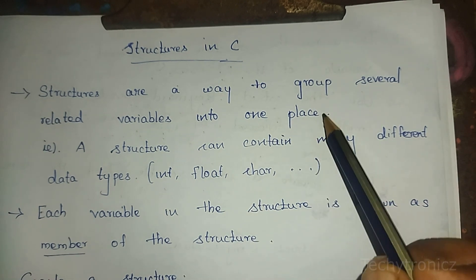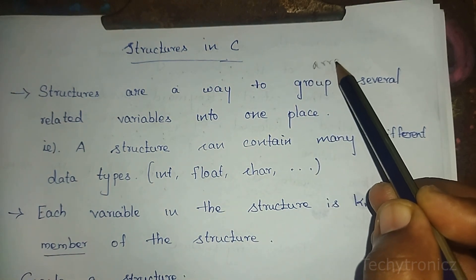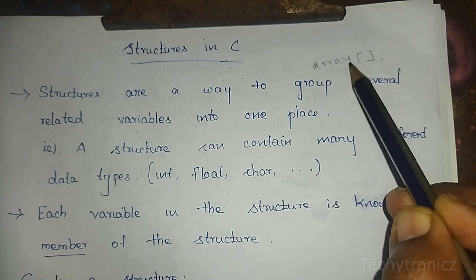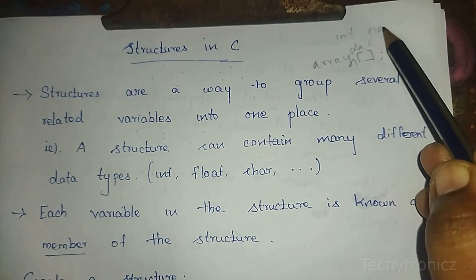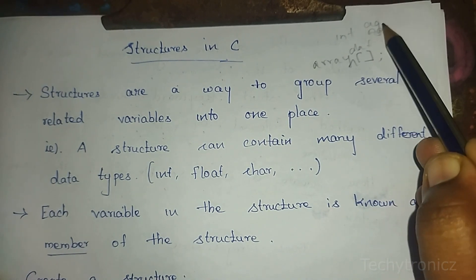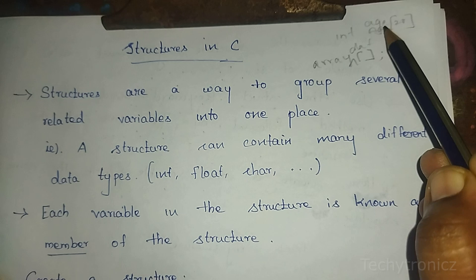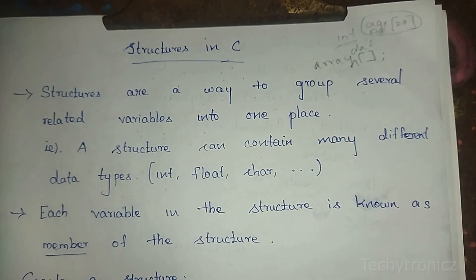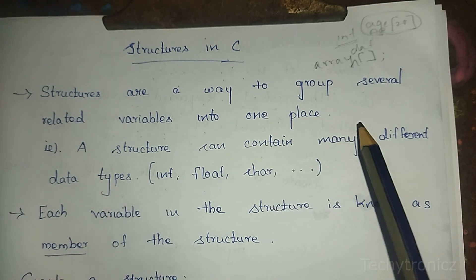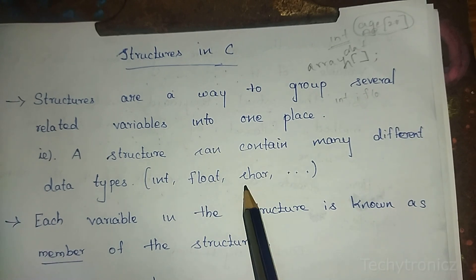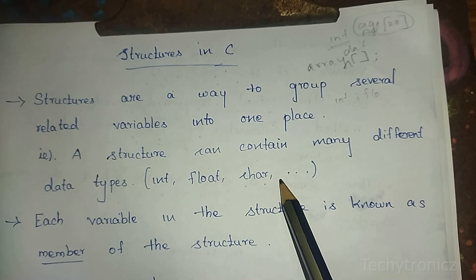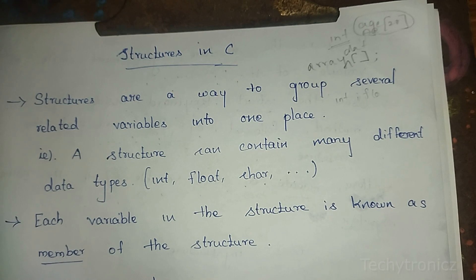If you have an array, you can use it for one data type — for example, int age[20]. So with an array, only one data type of variables can be used. But in a structure, we can use an array of data types: int, float, character, string, double — all in a single place.